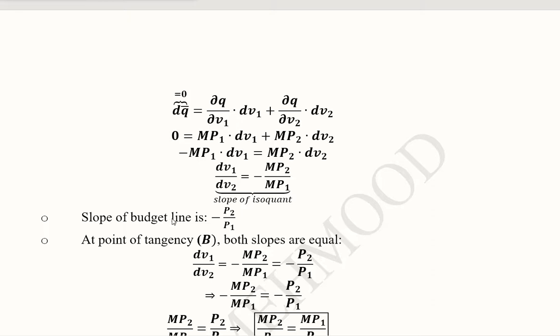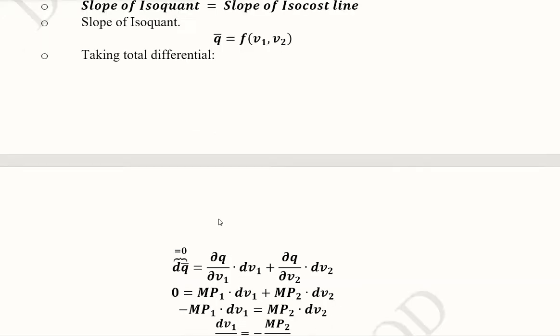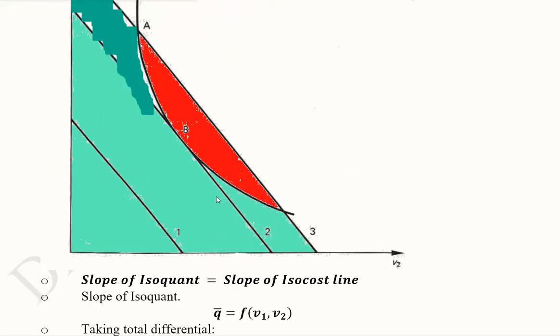We know that the slope of the budget line is simply the ratio of the two prices with a negative sign. It's a negatively sloped curve, as you can see.